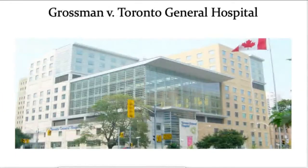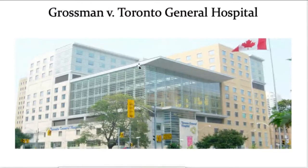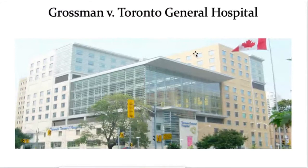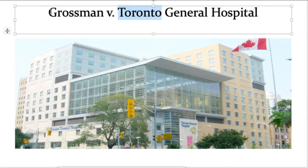The documents are often where the real action is. If this were CSI, truth would emerge from a medical examination of the dead body or physical evidence. In reality, especially when dealing with large institutional litigants, they have paper trails and that's how you find out what actually happened. If you're acting for Grossman's family, what documents might the hospital have? They might have records of what he was doing, an account of when he went missing, or proof they called the police.